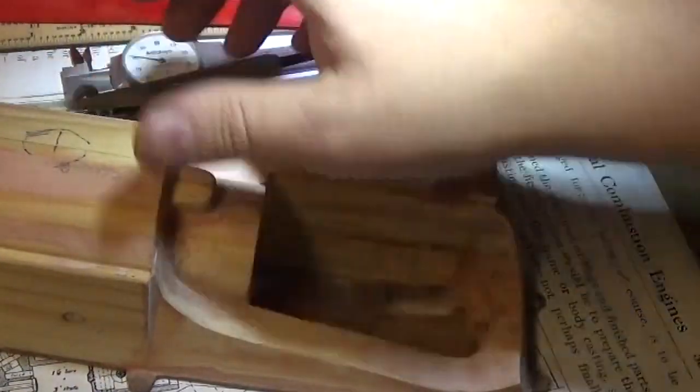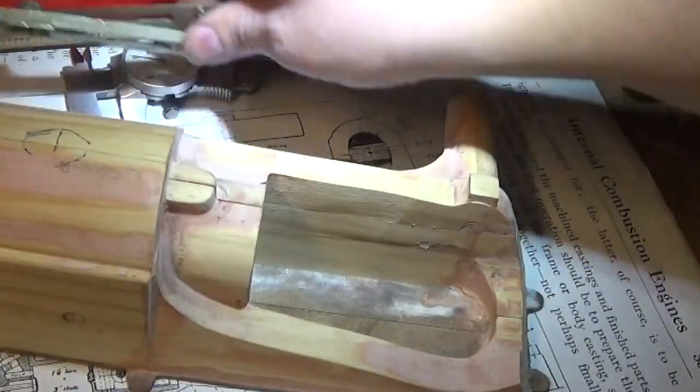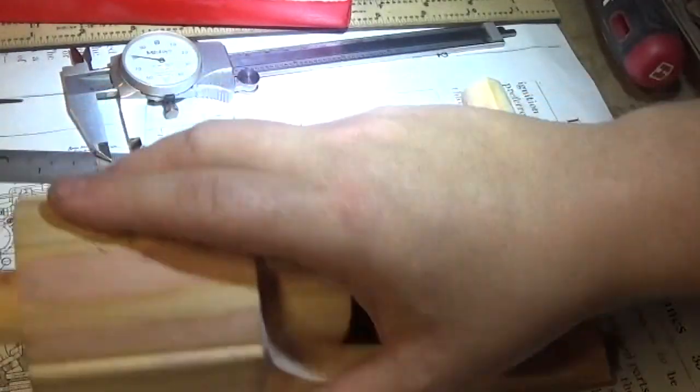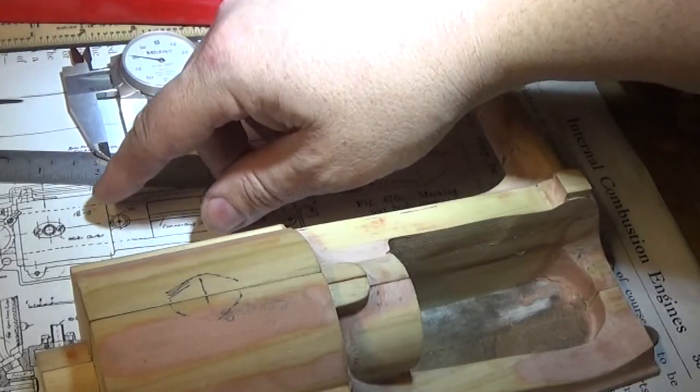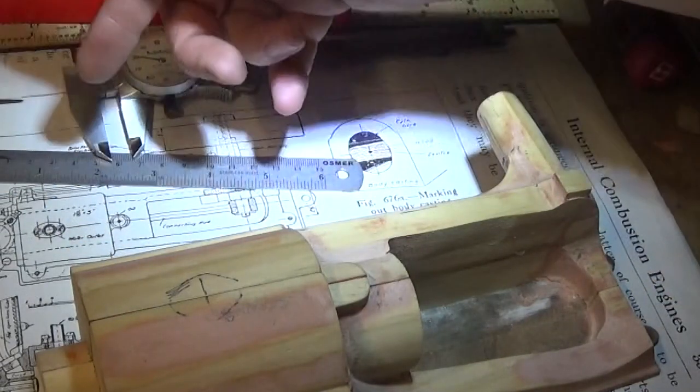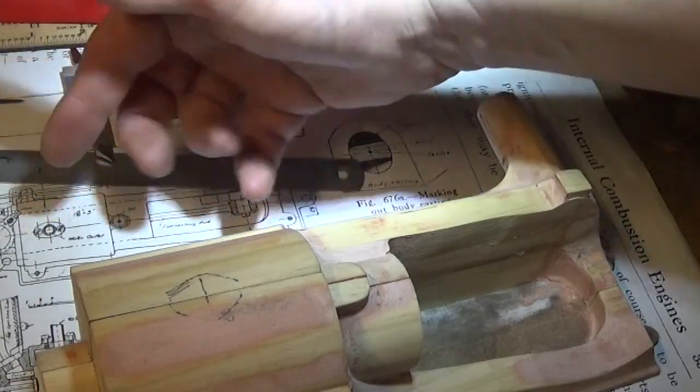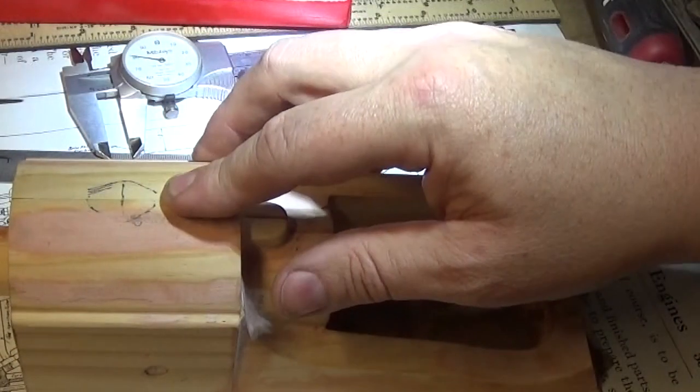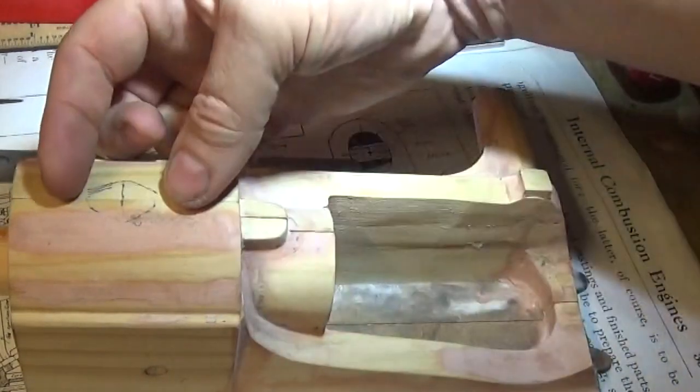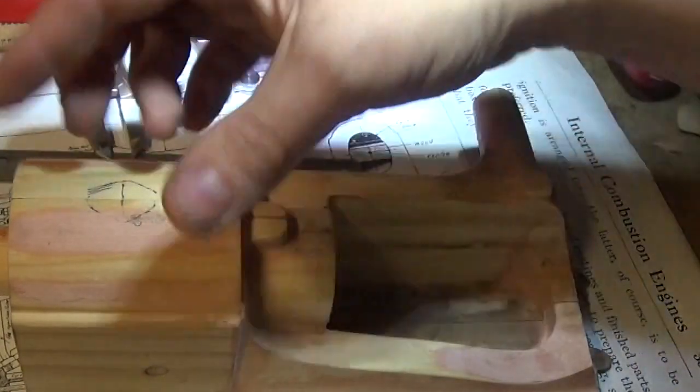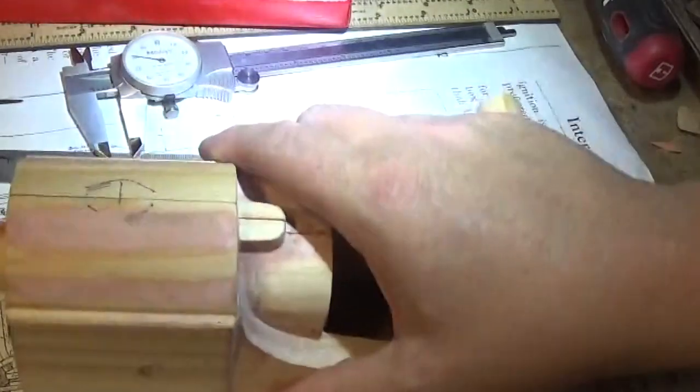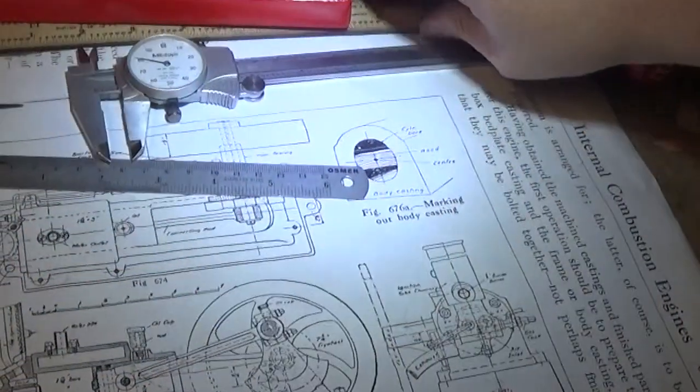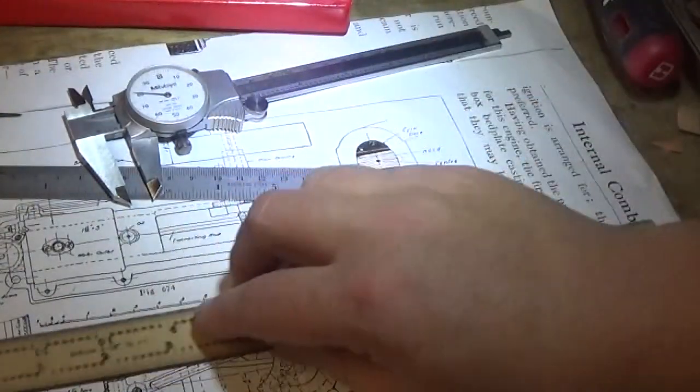Because this is a three-quarter scale model. So the next part of the process is to get a calculator and multiply the full-size dimension by 0.75. That gives us an inch and a thirty-second along there, which is how big this needs to be.